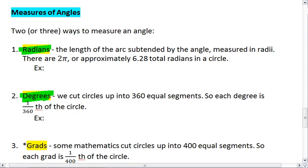As we saw above, radians tells us the length of the arc subtended by the angle measured in radii. So if I have one radian, it means my arc length equals one radius length. Two radians will mean two radii, or two radius lengths.